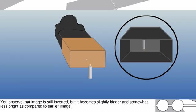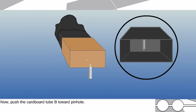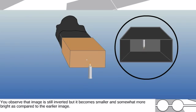Now push the cardboard tube B toward pinhole. You observe that image is still inverted but it becomes smaller and somewhat more bright as compared to the earlier image.